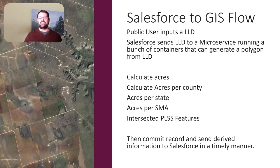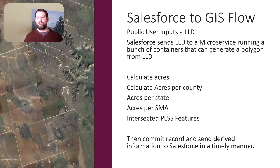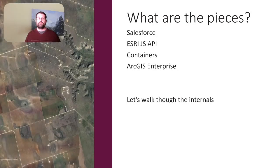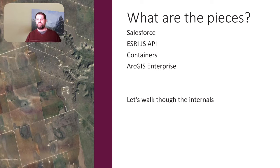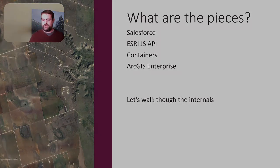After that's all done, we commit the record and send the derived information off to Salesforce so they can record it. But this all has to be done in a timely manner — we have to do all this processing very quickly and return. The key pieces are Salesforce, the Esri JavaScript API, containers, and ArcGIS Enterprise.